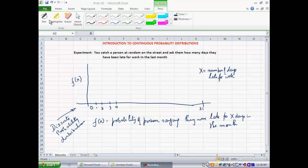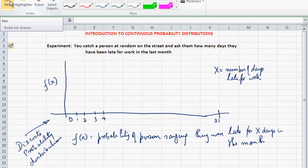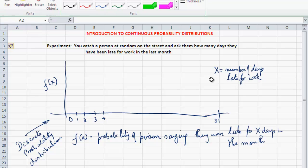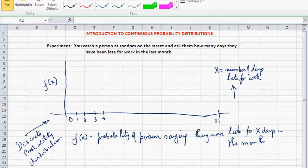Consider the following experiment shown on the spreadsheet here. You catch a person at random on the street and ask them how many days they have been late for work in the previous month. If we use the letter X to represent the number of days that this person would say they have been late for work, then you can see X is discrete. It can only take integer values from 0 to 31 inclusive.